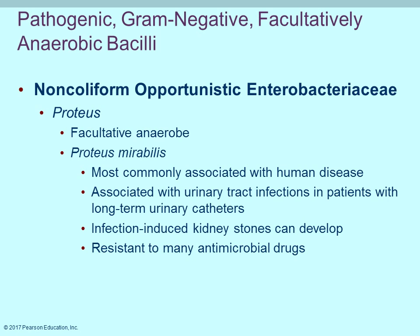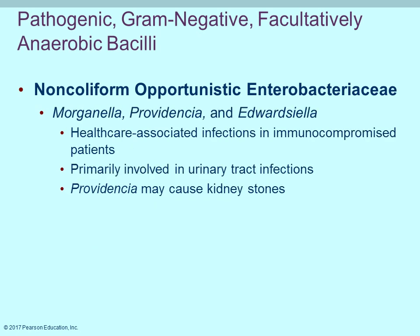Among the non-coliform opportunistic bacteria, Proteus mirabilis is the most common pathogen of the Proteus genus. It is often associated with urinary tract infections, particularly in patients who have had a catheter in for a long time. Ideally catheters should be in for as little time as possible — removing them as soon as possible reduces infection risk. Morganella, Providencia, and Edwardsiella are also mostly associated with urinary tract infections; higher risk patients are those who are immunocompromised.